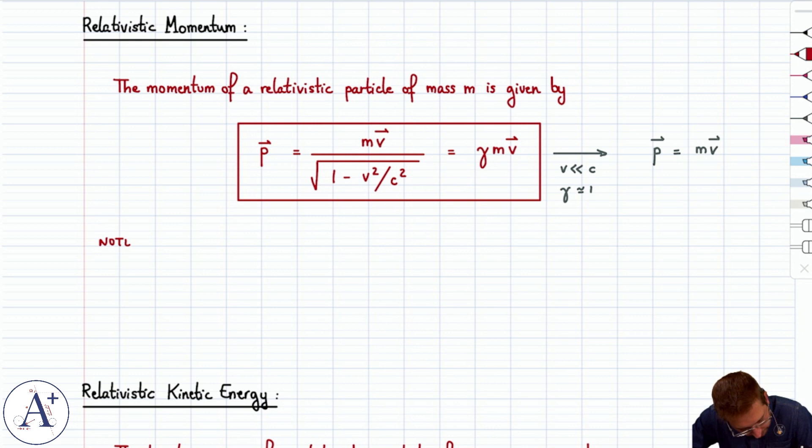Note however that because the limit as v approaches c of gamma is equal to plus infinity, it follows that in magnitude the limit of p as v approaches c is also plus infinity.